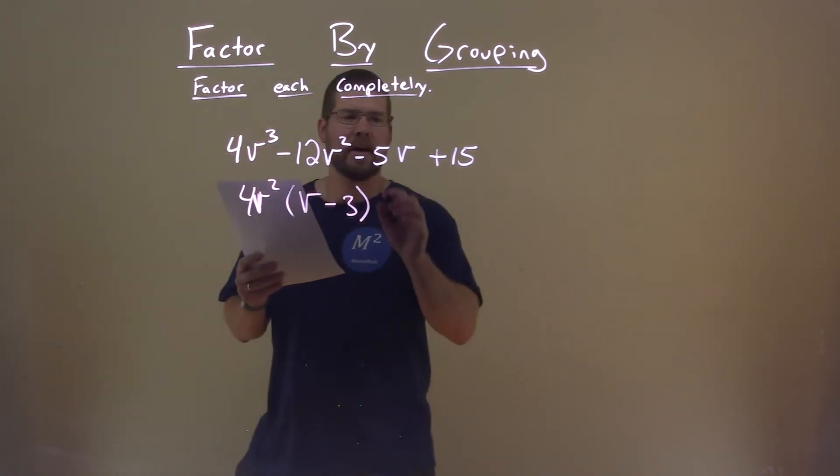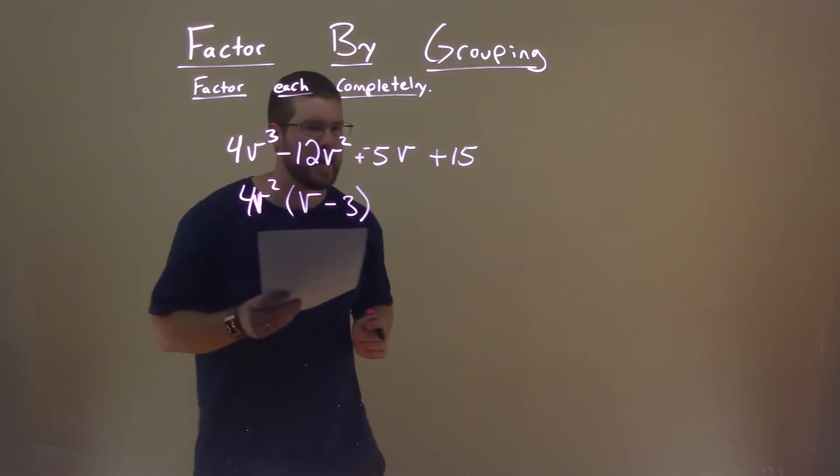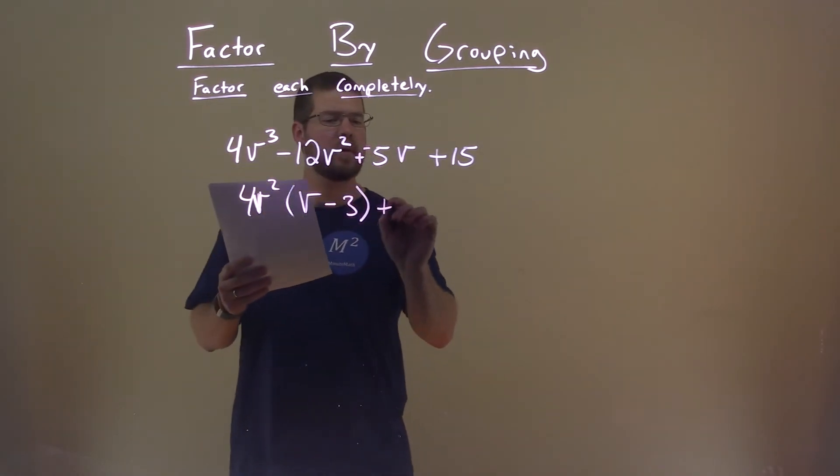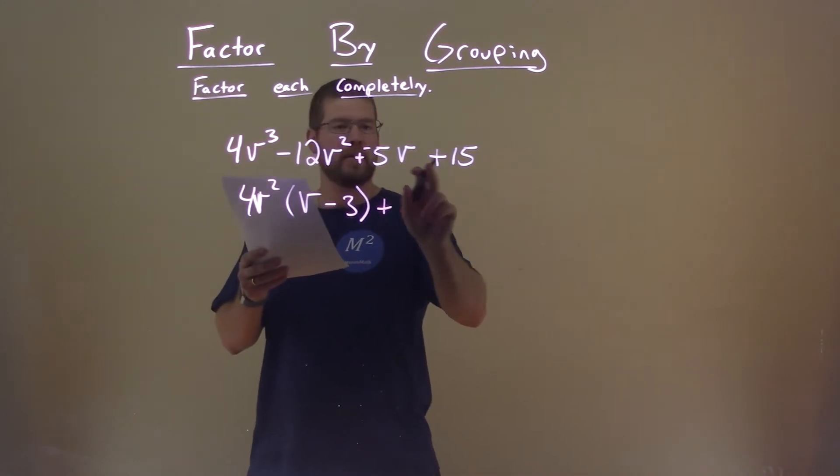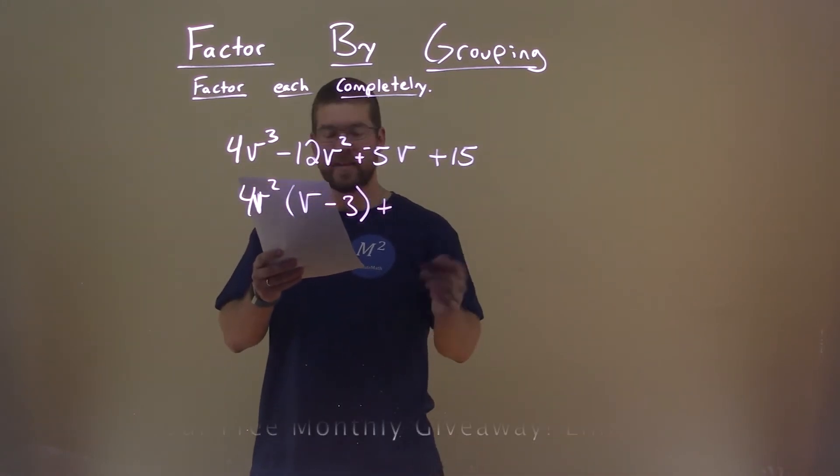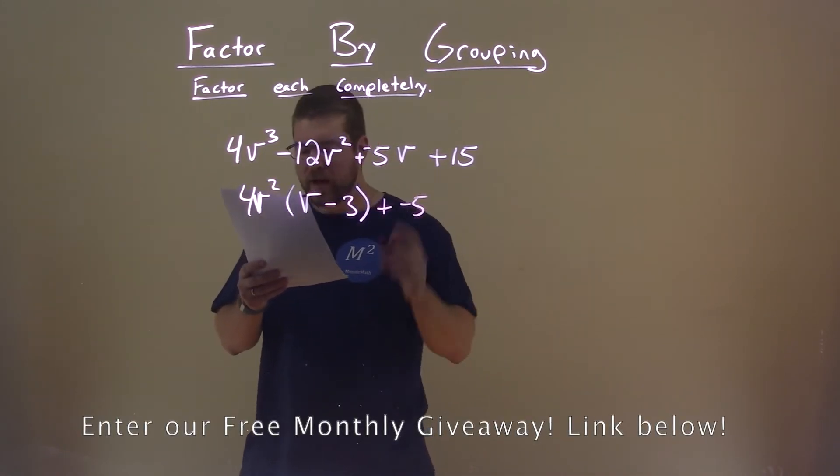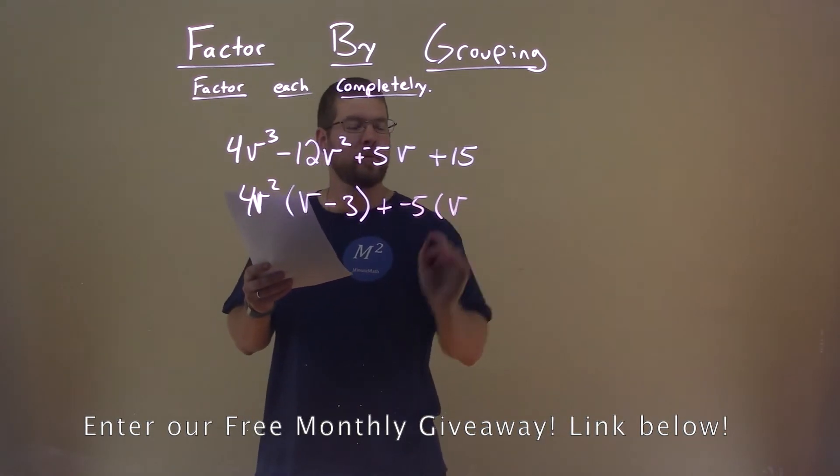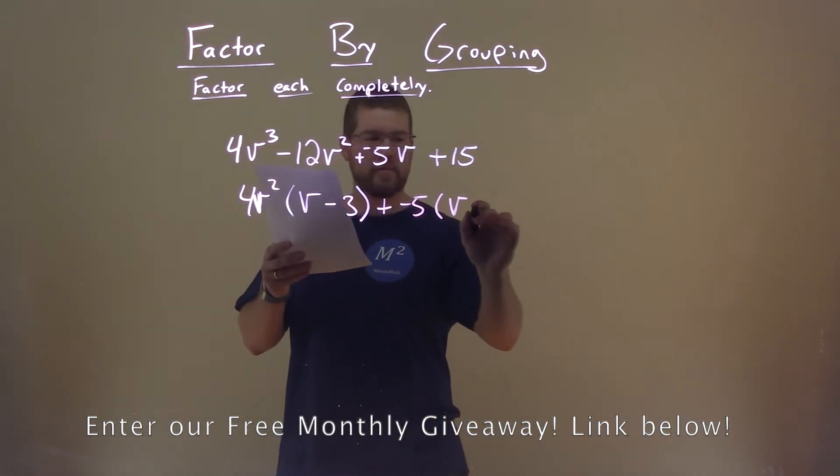The second part here, again I like to write these sometimes as a plus a negative when I'm doing this. So what goes into both of these, negative 5v and 15? That's a negative 5. If we pull out a negative 5, we're left with a v and this becomes a minus 3.